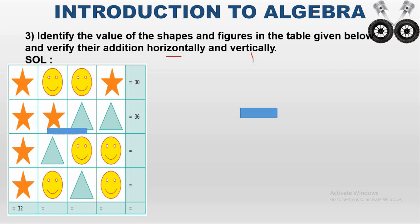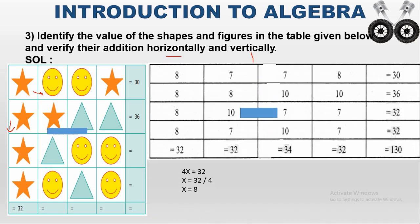Looking at the first column, it is filled with 4 stars and the column total is given as 32. So 4X equals 32. Since 4 is multiplying X, it becomes division on the right side: X equals 32 divided by 4. Since 8 fours are 32, X equals 8. So each star has a value of 8.